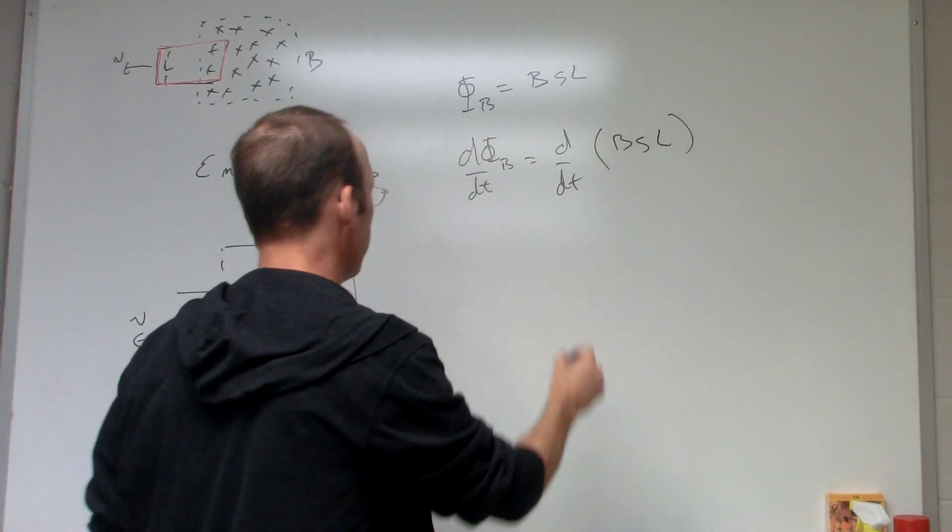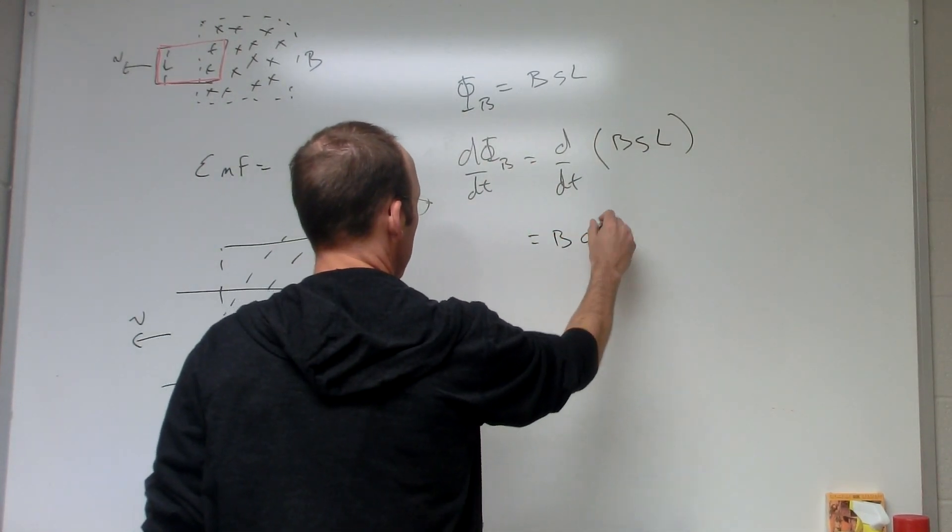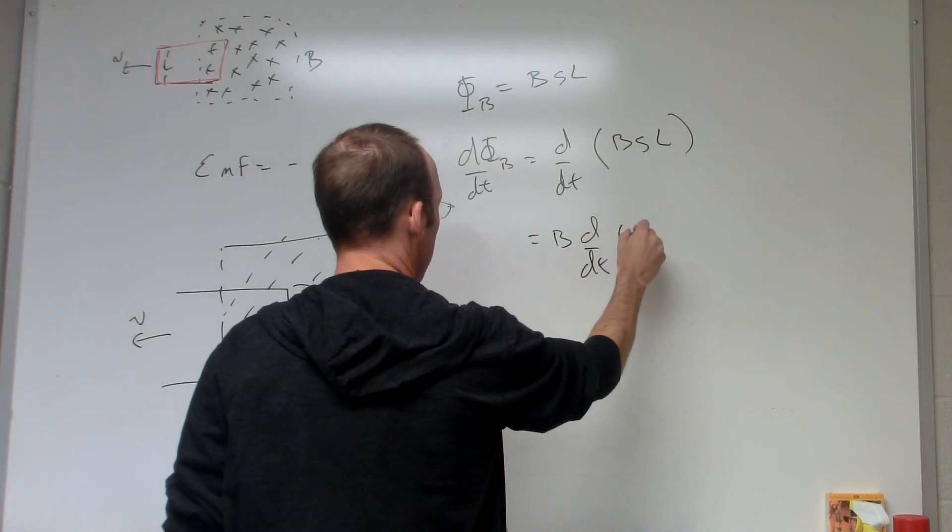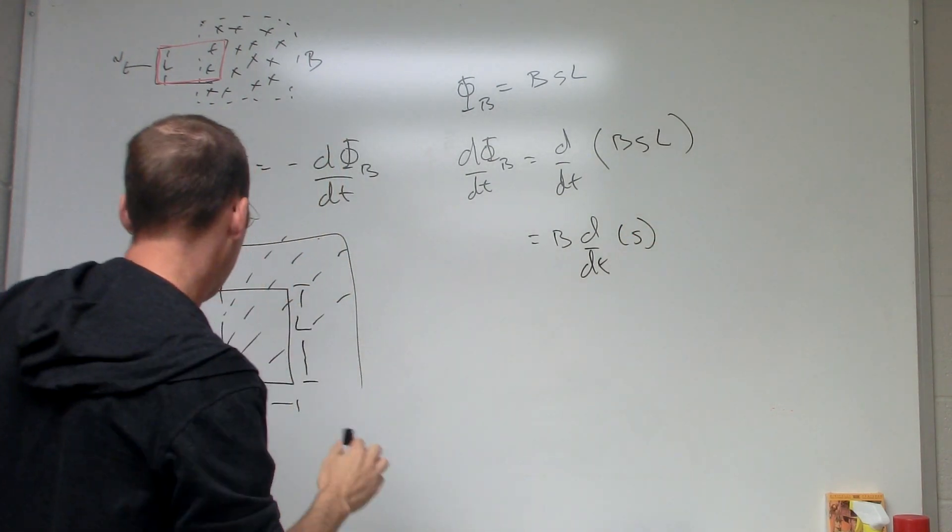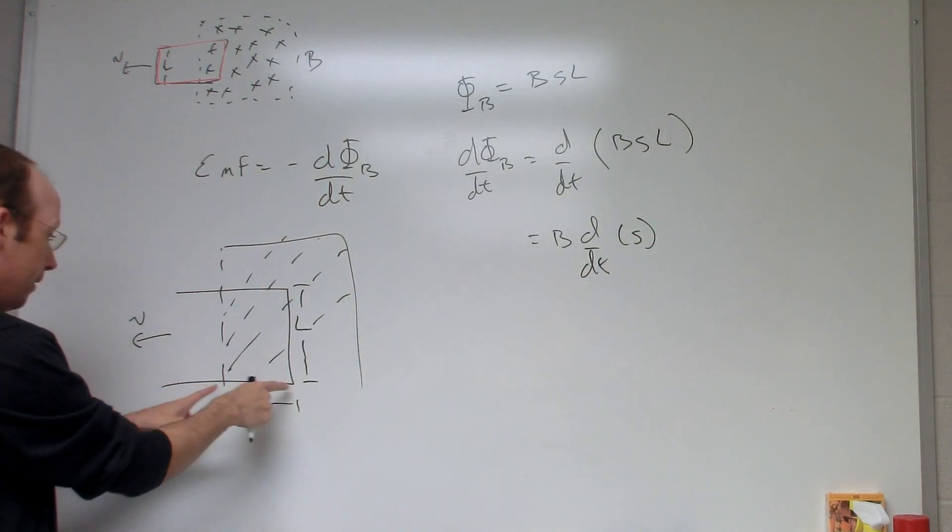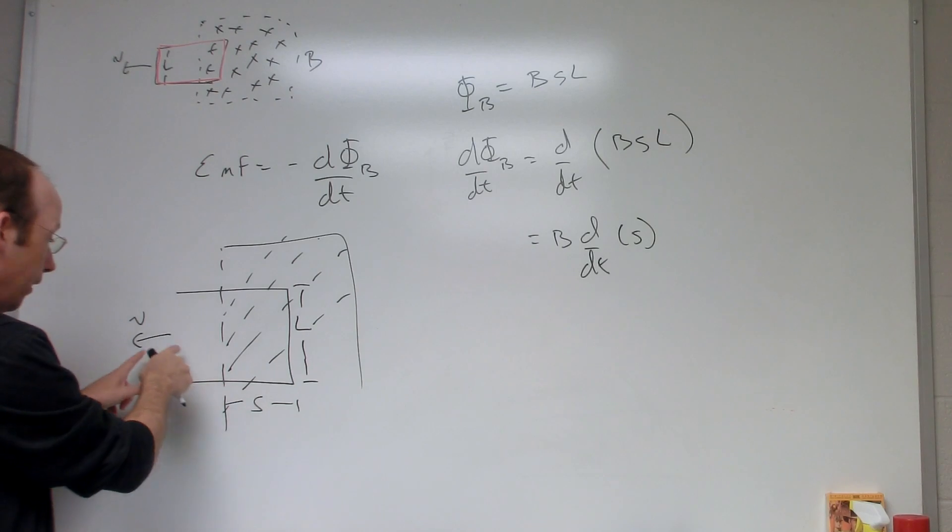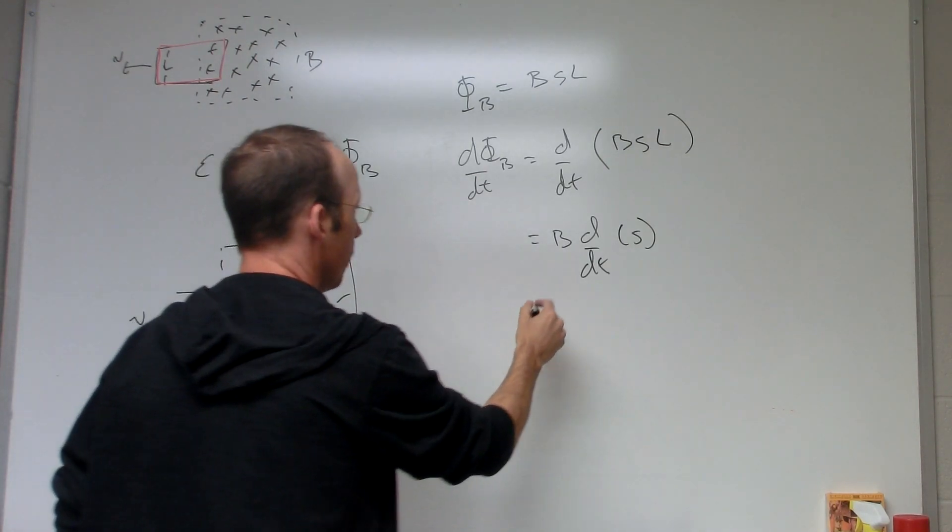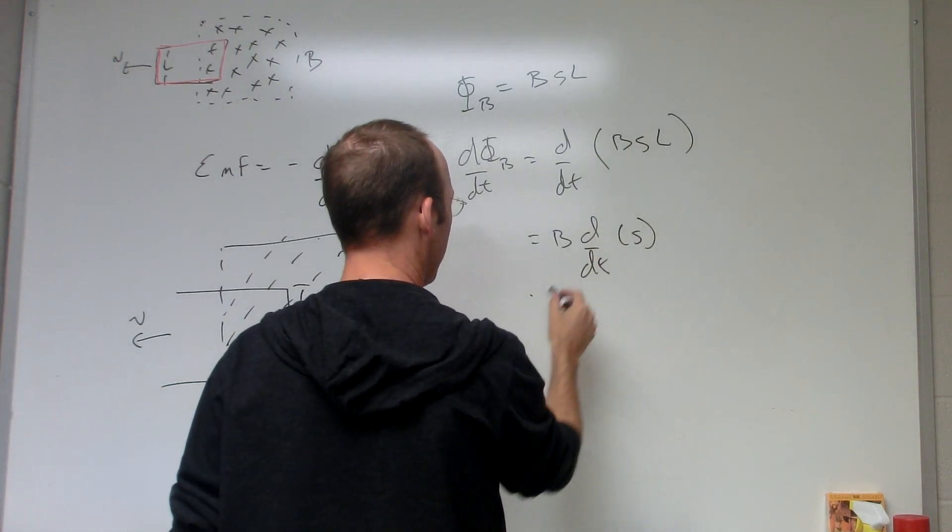So we can pull those out, so I get BL d/dt of s. And how fast is this moving? ds/dt is V. So I get... oh wait, where'd my L go? BL times V.